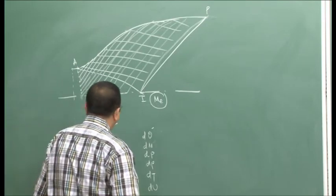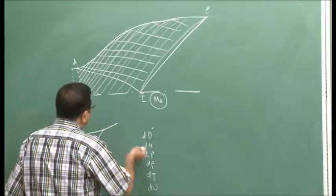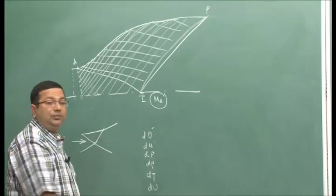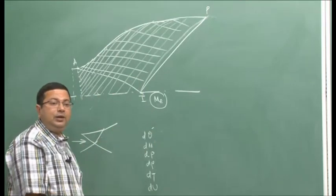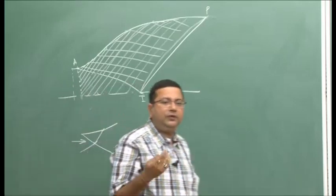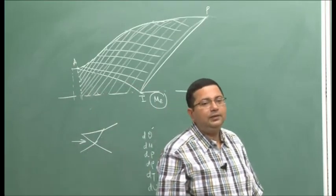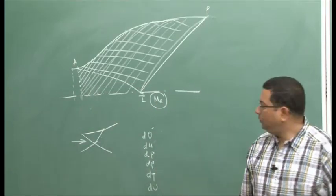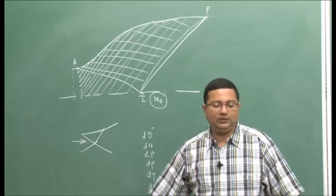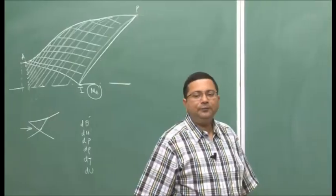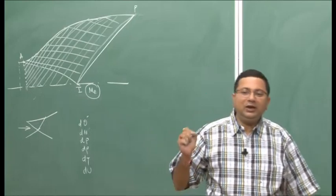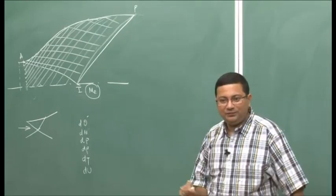One important point is that the accuracy of this prediction depends on the fineness of our grid. If you go to a very fine grid, the accuracy will be better. If you go to a coarse grid, the accuracy will be compromised. But this is a very good initial guess of our shape.